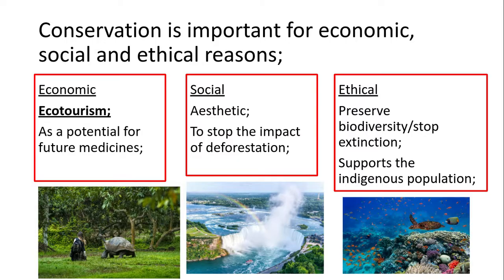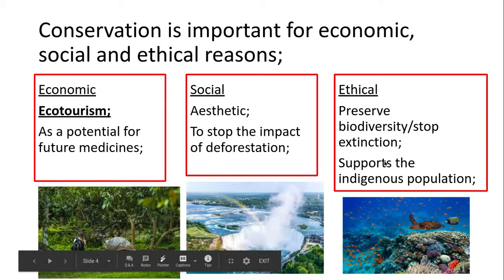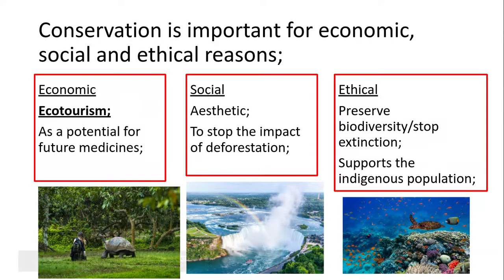Ethical reasons why we would like to undergo conservation: to preserve biodiversity and stop the extinction of organisms. For example, some rhino species are not going to be around in 10 to 20 years because we haven't managed to protect them as much as maybe we should have done. Also — and this is a weaker point, I've seen it on the mark scheme once — some of the species that we conserve help to support indigenous populations.